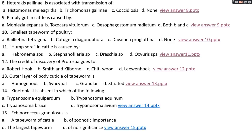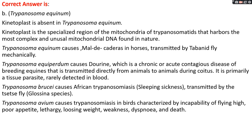Question number fourteen: kinetoplast is absent in which of the following? Options A, Trypanosoma equiperdum; options B, Trypanosoma equinum; option C, Trypanosoma brucei; options D, Trypanosoma avium. The right answer is option B, Trypanosoma equinum. Kinetoplast is absent in Trypanosoma equinum. The kinetoplast is a specialized region present in the mitochondria containing mitochondrial DNA. Trypanosoma equinum causes mal de caderas disease in horses, transmitted by Tabanus flies. Trypanosoma equiperdum is responsible for the disease dourine, a sexually transmitted disease transmitted from animal to animal during coitus; it is a genital tissue parasite not found in the blood.